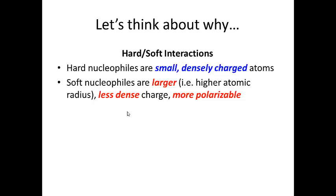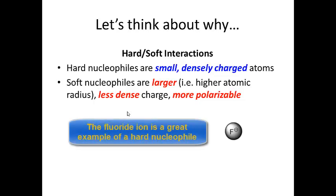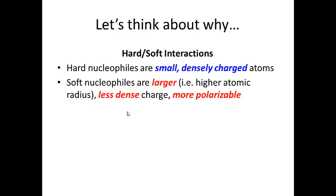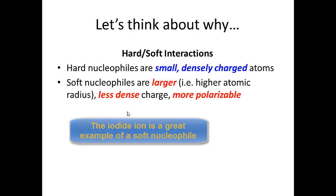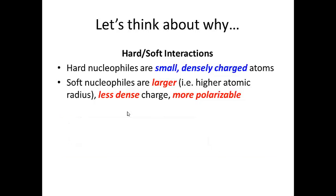We need to talk about hard and soft acids and bases. A hard nucleophile is a small, densely charged nucleophile — the atom where the charge is located is small and densely charged. If it's a soft nucleophile, then it's larger, the charge is less dense, and it's a more polarizable atom.